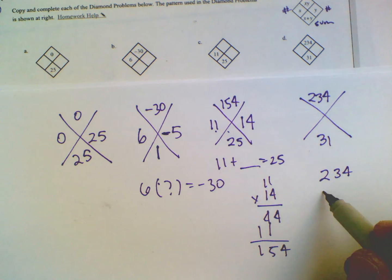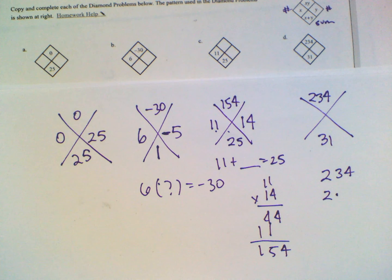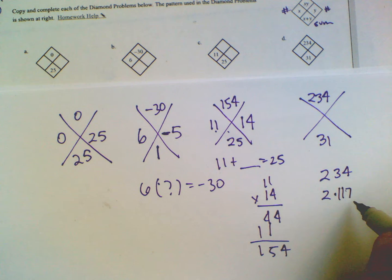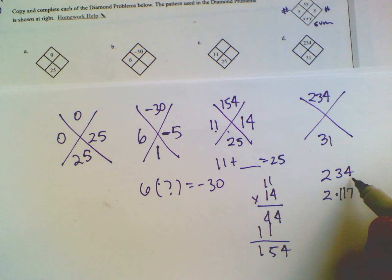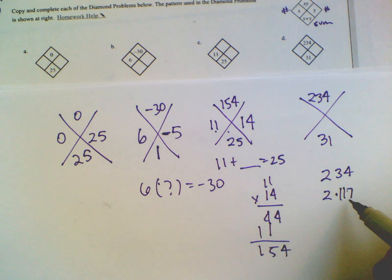So if we say 2 times something is 234, what is that something? So 2 times 117 is 234. So that can't be a sum of 31. So what else? Now this is where it gets tricky. So here's what I tend to do.